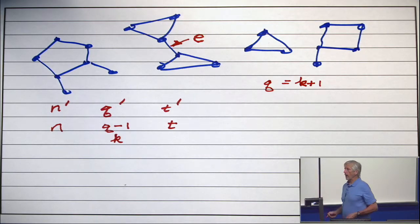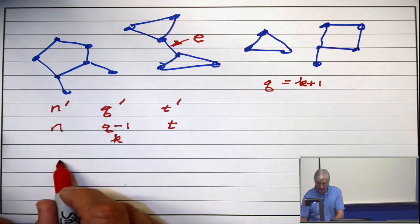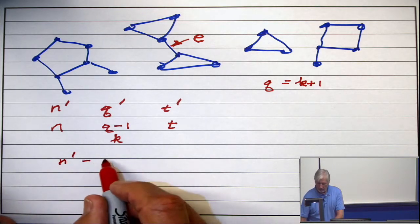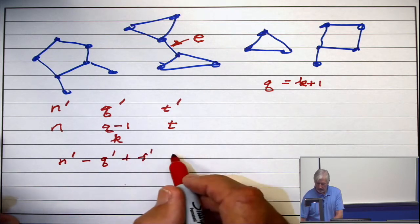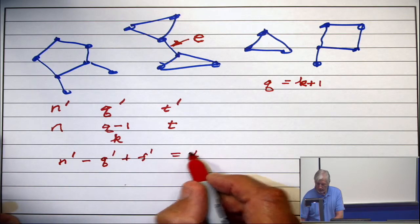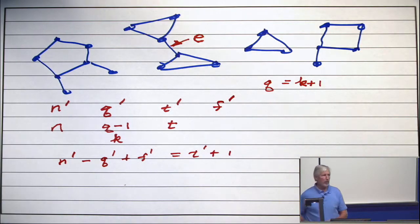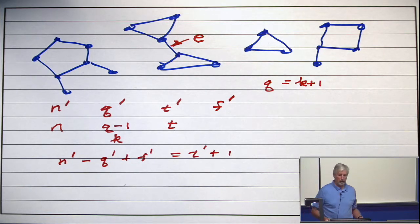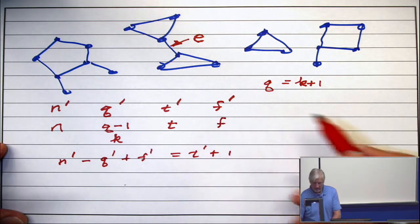So in the reduced graph, which has fewer edges, Euler's formula holds, so we know n prime minus q prime plus f prime equals t prime plus 1. And I didn't write f prime. I should have. What's the value of f prime compared to f? It's the same.